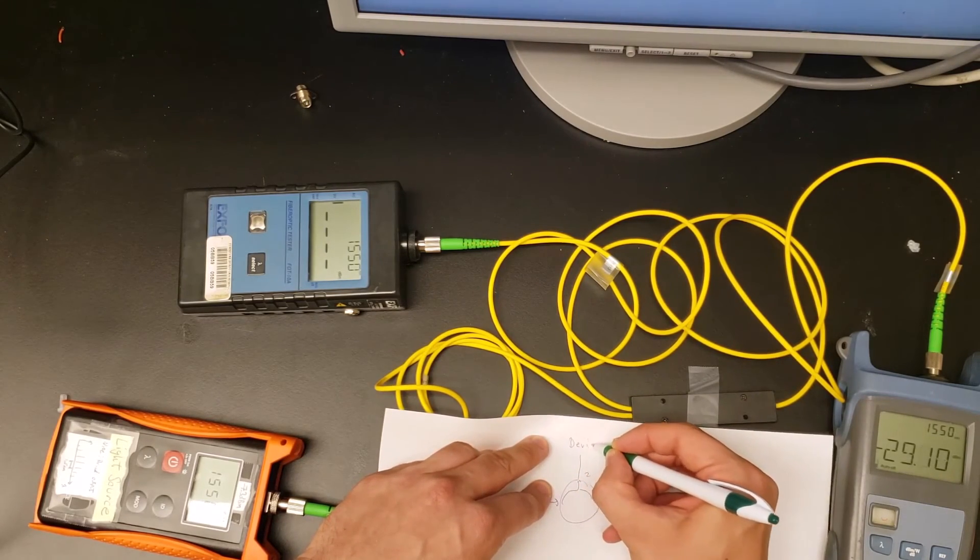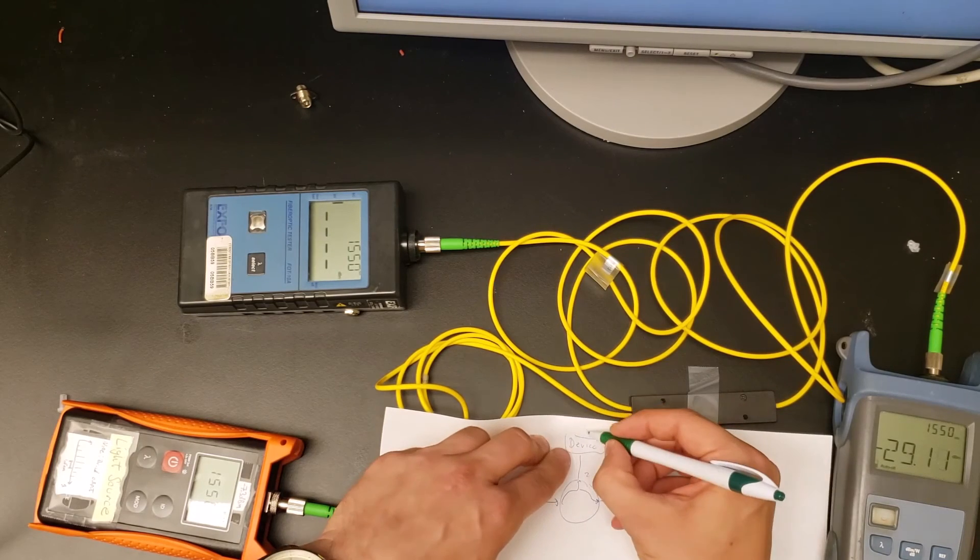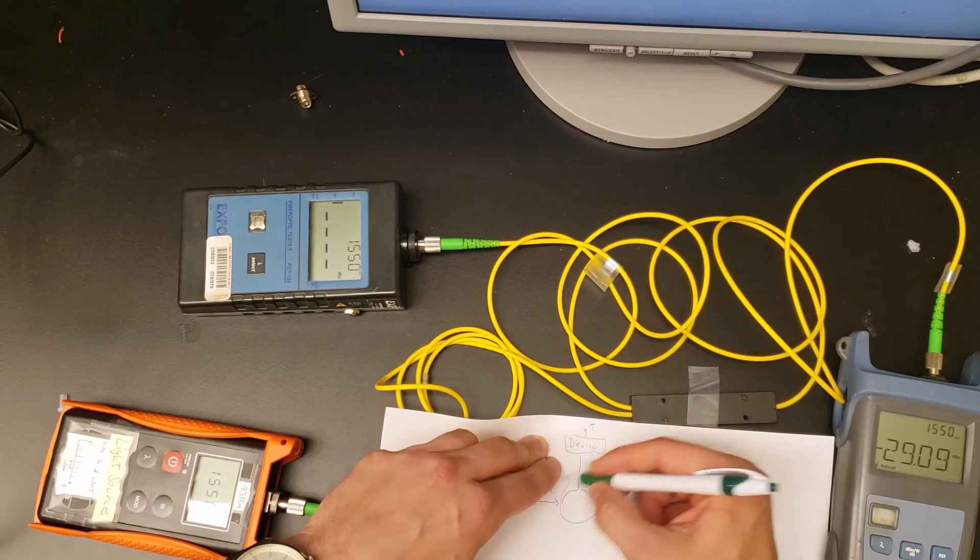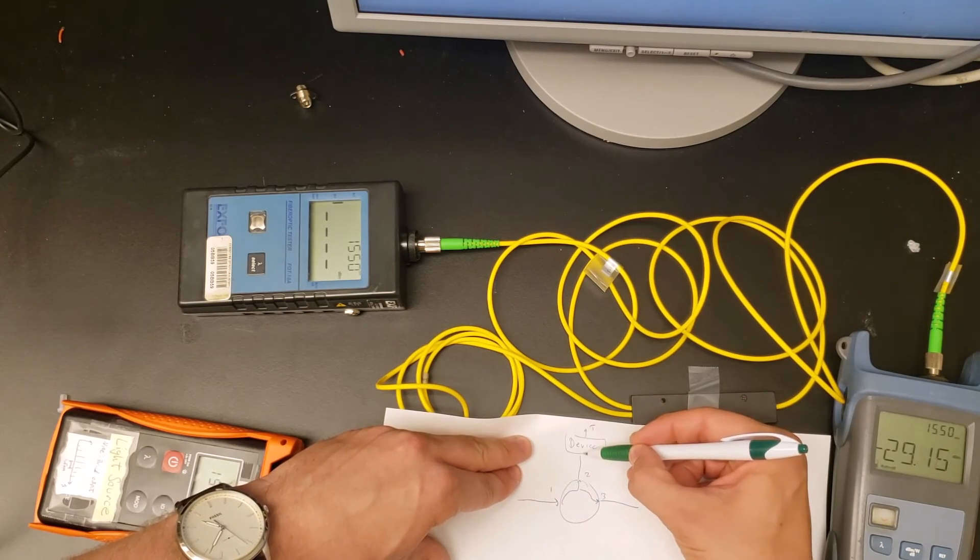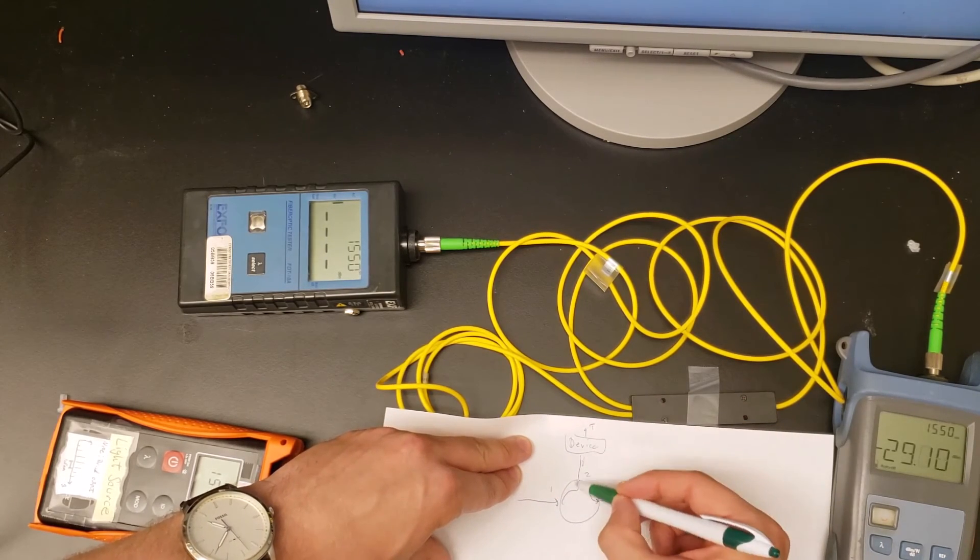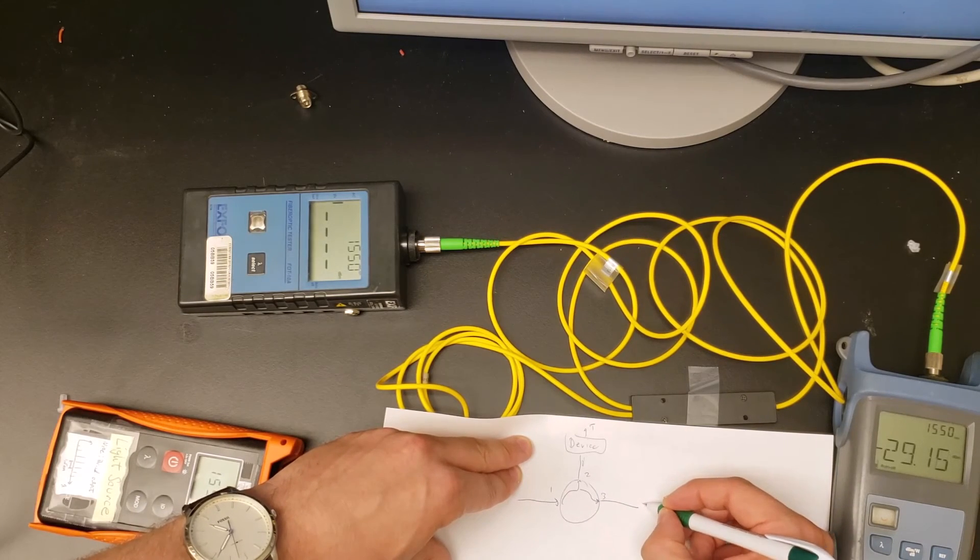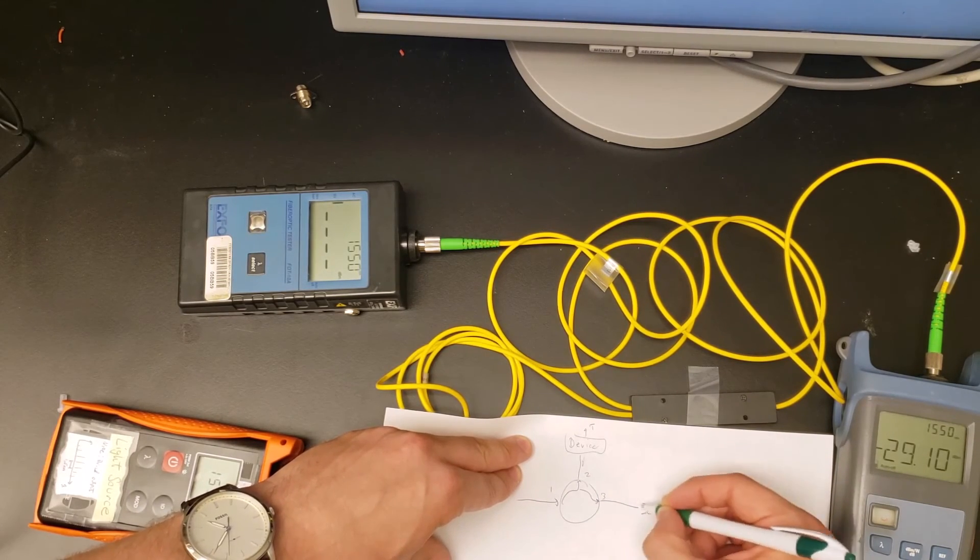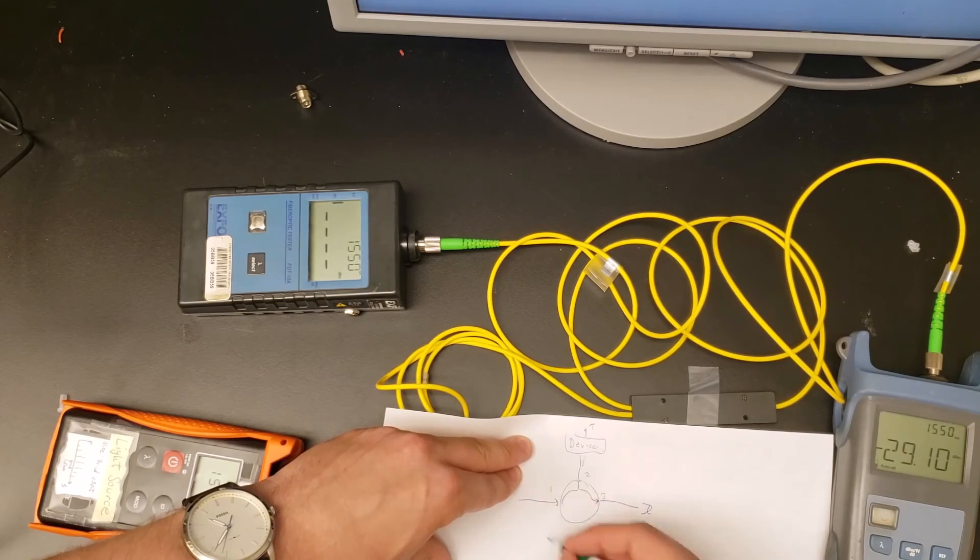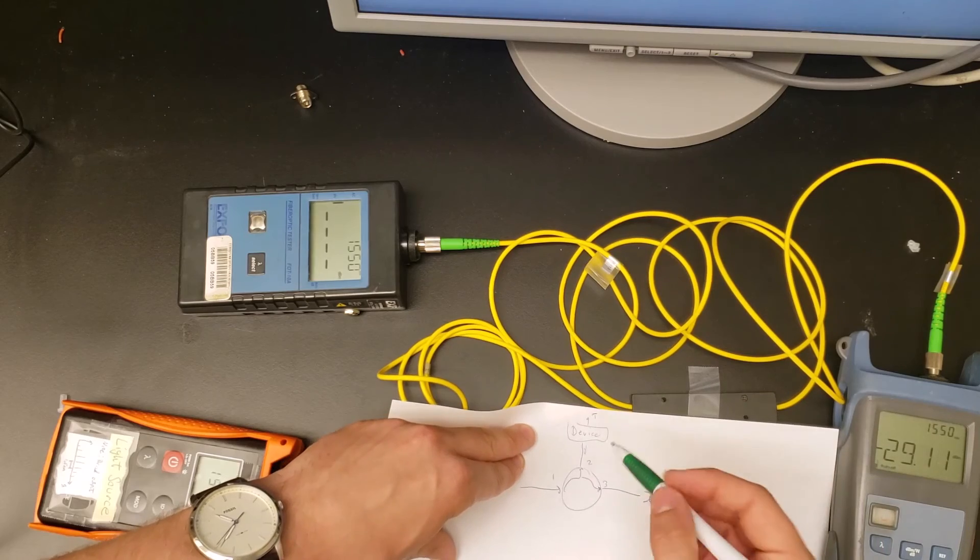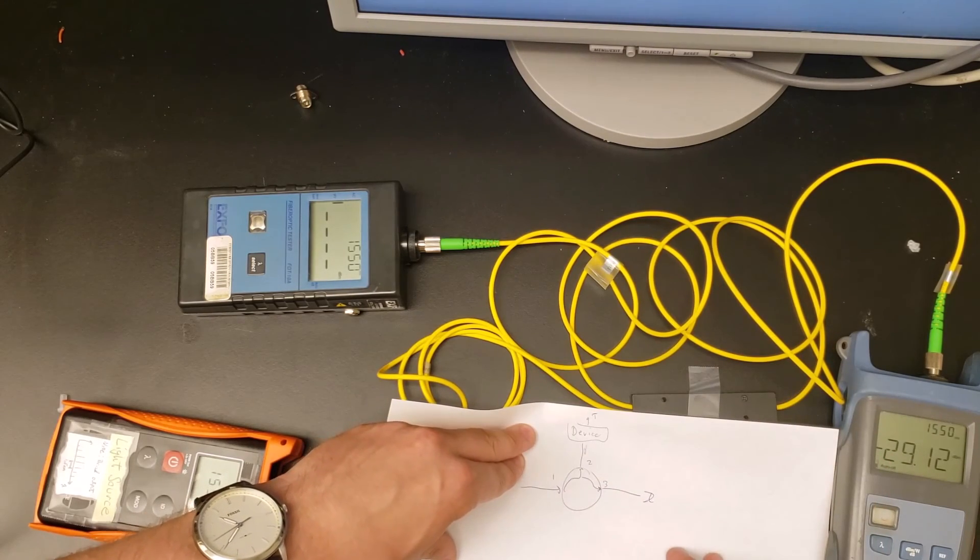Basically the idea is that a circulator allows you to send light into a device over here. You can measure the transmission that comes out here. But if you want to measure the reflection, you have to use the circulator because it sends the light from the device back here. Instead of going back into port number one, it exits through port number three. Then you can have another detector to catch the light and analyze it. So circulators are extremely useful devices used in many different setups.